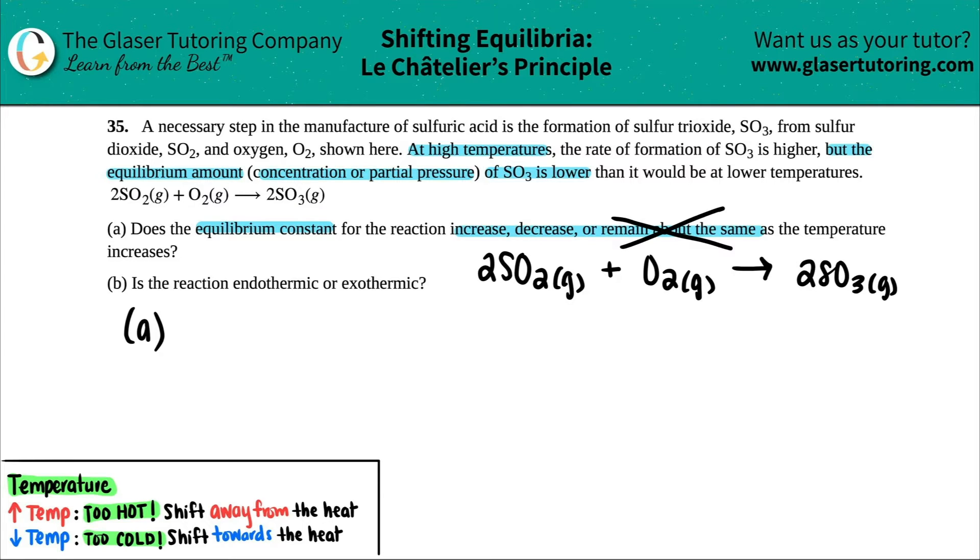So this comes from the K formula. Remember, equilibrium constant is the K value. And remember, we've done tons of problems. K is equal to the products divided by the reactants. And remember, you've got to raise them to those coefficients.